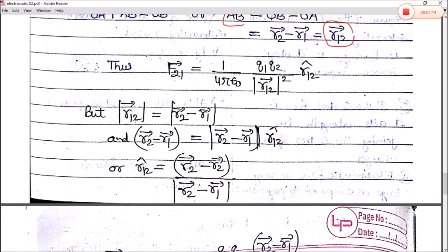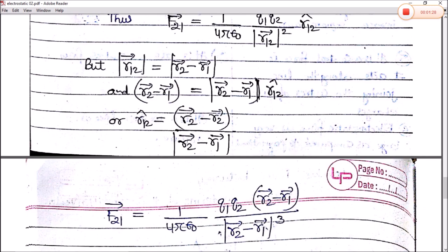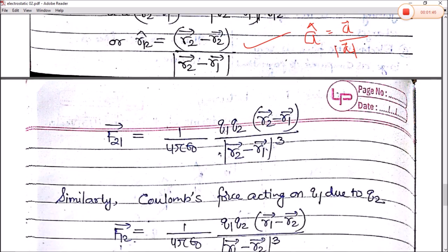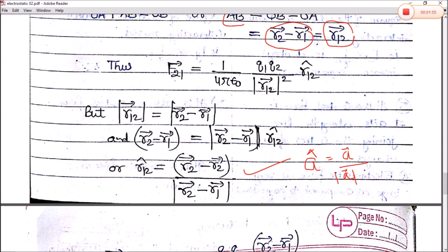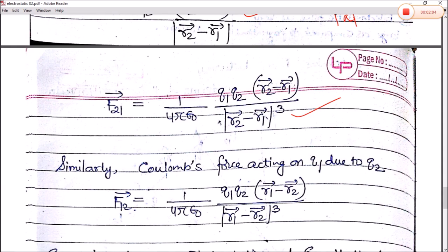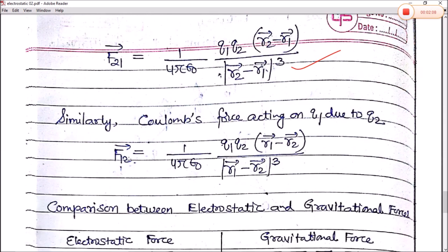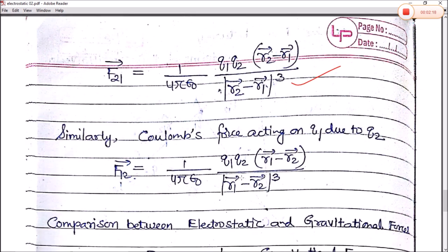Now, r12 = r2 − r1, so |r12| = |r2 − r1|. The unit vector r̂₁₂ = (r2 − r1) / |r2 − r1|. Substituting into the force equation, the denominator becomes |r2 − r1|³. Similarly, Coulomb's force acting on q1 due to q2 is F12 = (1/4πε₀) × q1×q2 × (r1 − r2) / |r1 − r2|³. This is Coulomb's law in terms of position vectors.